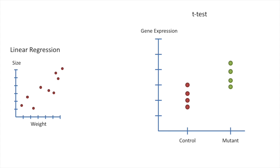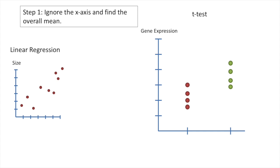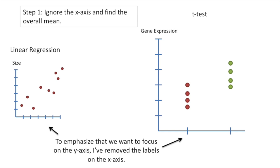So now I'm going to walk you through the steps for using the techniques from linear regression to do a t-test. On the left side of the screen, I'll remind you how each step applies to linear regression. On the right side of the screen, I'll show you how those steps apply to t-tests. Step 1: ignore the x-axis and find the overall mean. To emphasize that we want to focus on the y-axis, I've removed the labels on the x-axis.